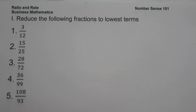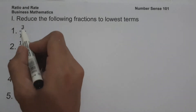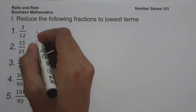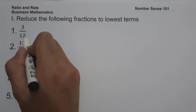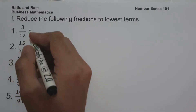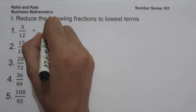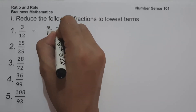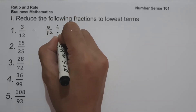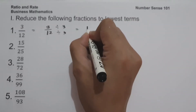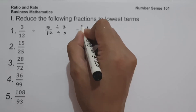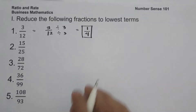On the first set of examples, we are going to reduce the following fractions to lowest terms. On example number one, we have 3 over 12. Since the greatest common factor between 3 and 12 is 3, let us divide the numerator and the denominator by 3. So 3 divided by 3 and 12 divided by 3 gives us 1 over 4, and this will be our answer.